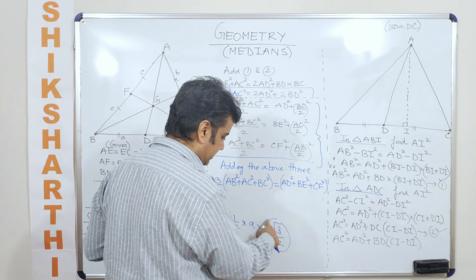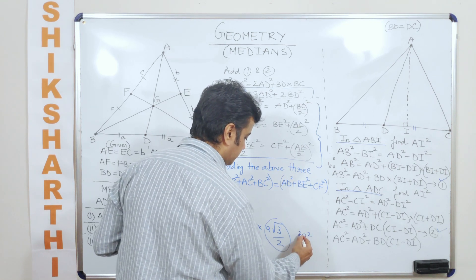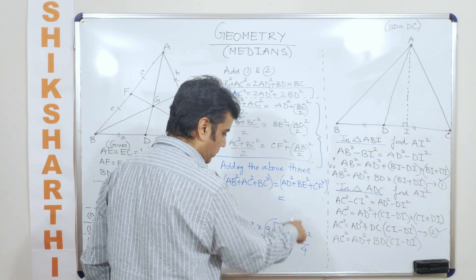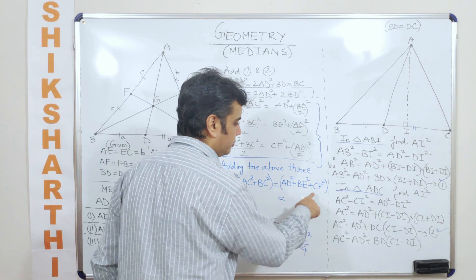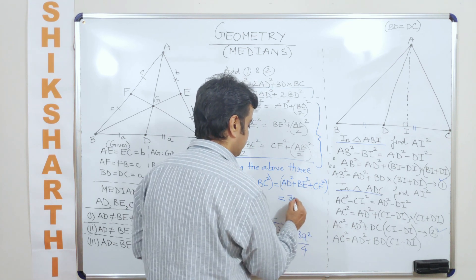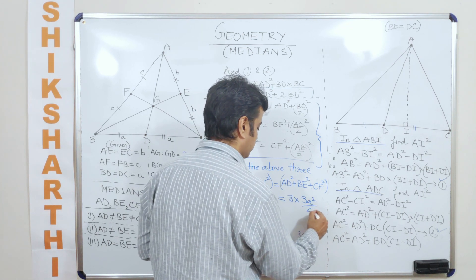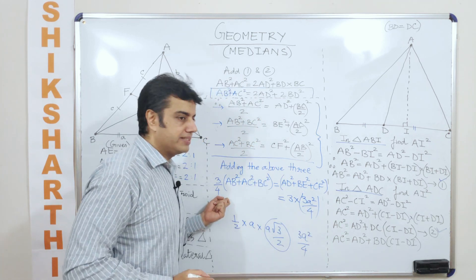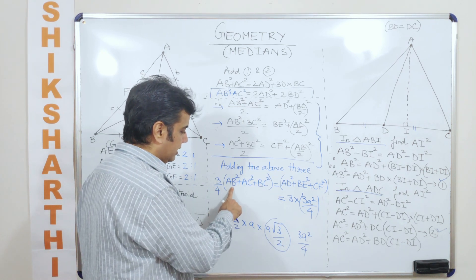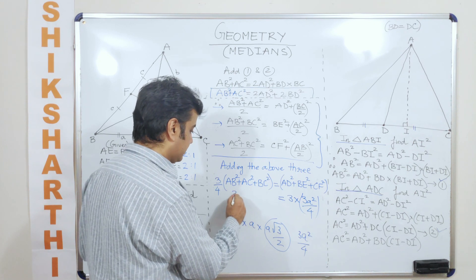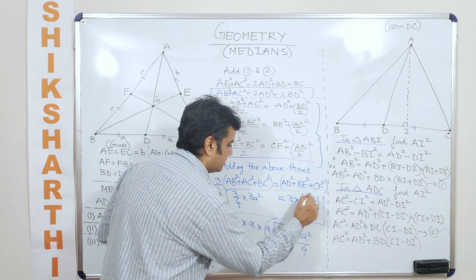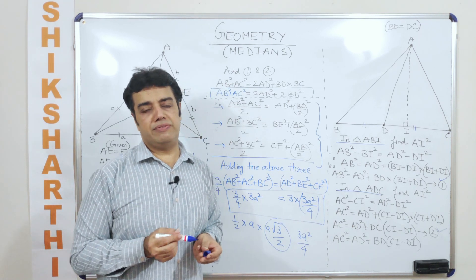Squaring the height formula, we get three such squares because the lengths of all three medians of an equilateral triangle are equal. So the right-hand side is 3 × (3a²/4). This should equate to the left-hand side: (3/4) of 3a² equals (9a²/4). A very beautiful conclusion can be drawn here.